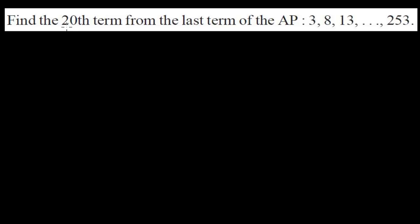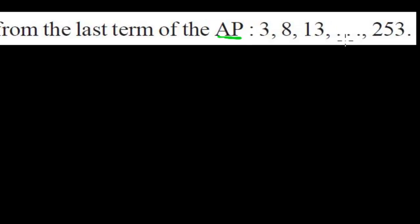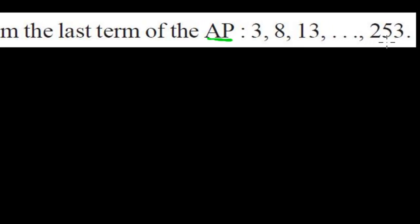Hi friends, here is another problem of arithmetic progression related to the nth term formula. The question is: find the 20th term from the last term of an arithmetic progression — 3, 8, 13 ... up to 253.